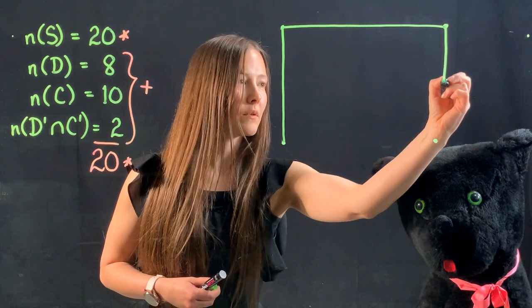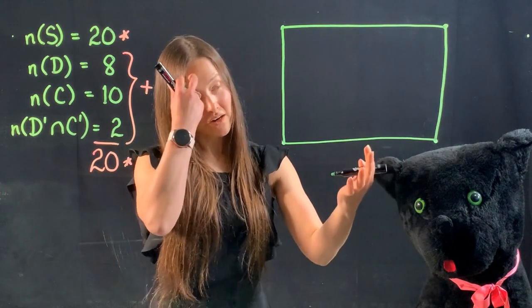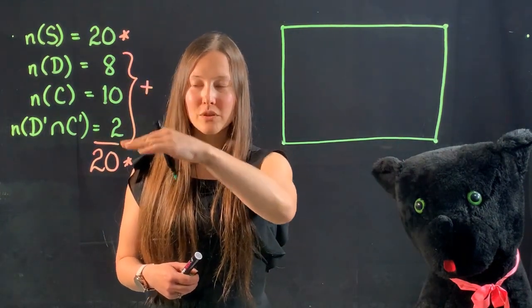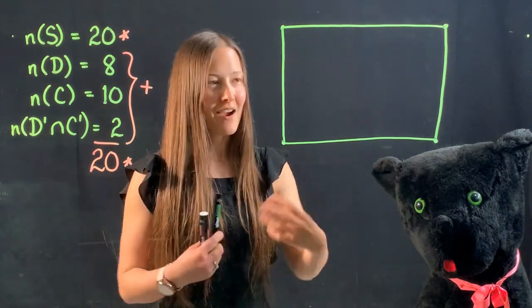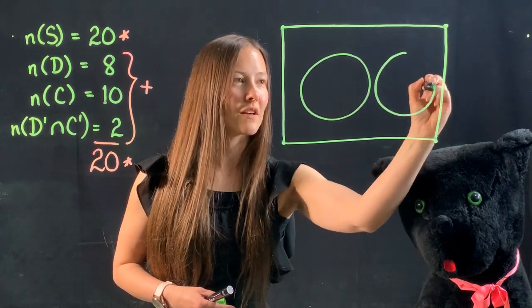So what I'm going to do now is create the box in which I'm going to house my Venn diagram. Because I already know that these numbers total to what is expected for the universal set, I'm going to draw two circles that have no intersection.